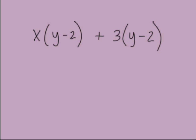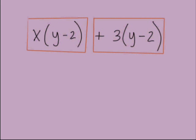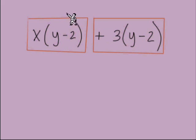Let's get into the next type of factoring: factor by grouping. We're going to be using ideas that we used when we were factoring using the GCF. Here's our first example: x times the quantity (y minus 2), plus 3 times the quantity (y minus 2). When we look at this, we have two terms — remember that terms are separated by adds and subtracts, but subtracts inside parentheses do not count as separating terms.